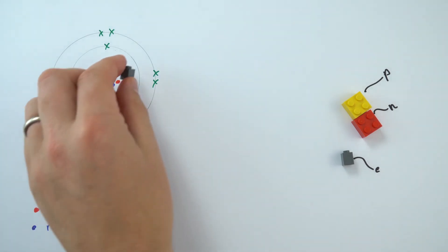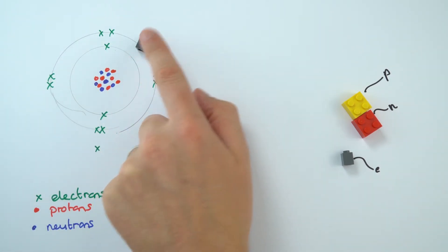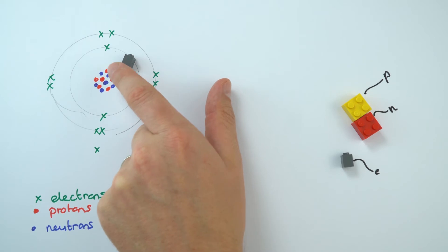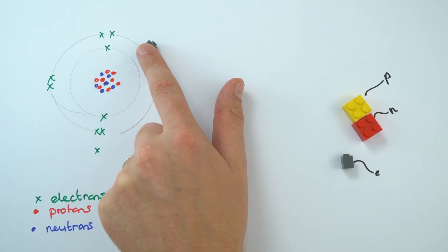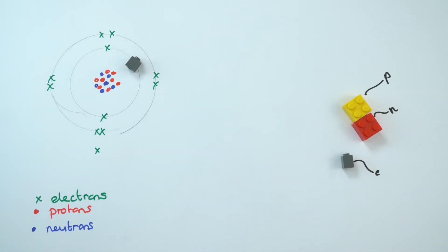So this is why Lego is really useful as a model because we can actually move it from one shell to the other. So for example it might absorb some energy and it might jump up to an outer shell and then as it loses energy it then gives out some electromagnetic radiation.